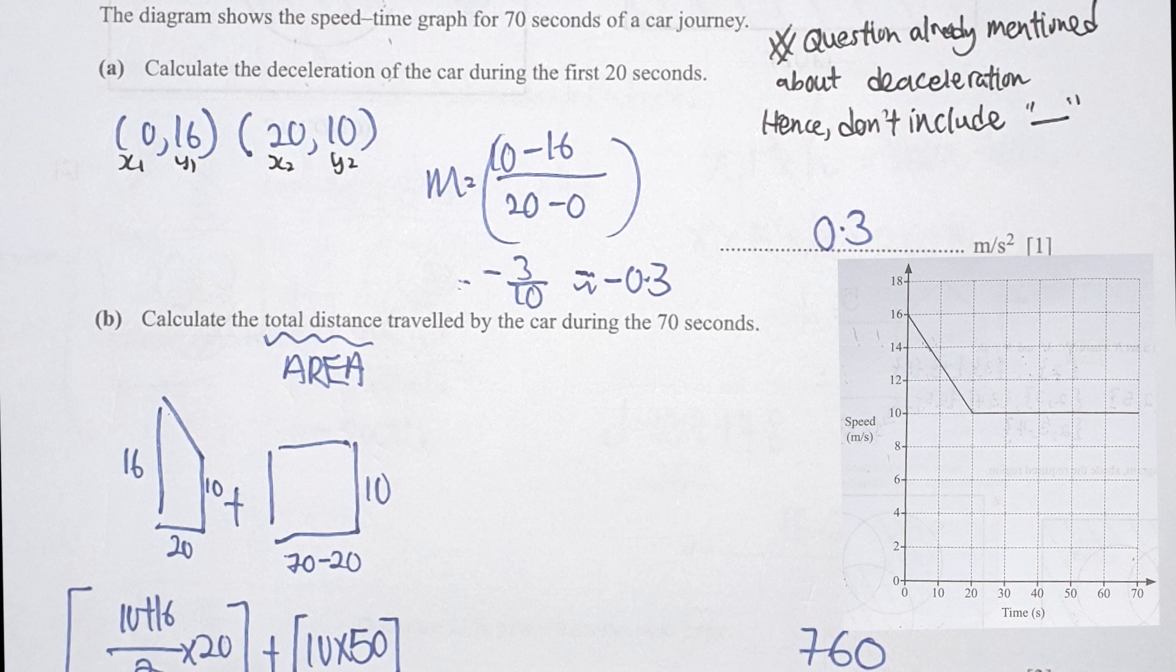Question 19: calculate the deceleration of the car during the first 20 seconds. I have two coordinates here, which is 0, 16 and 20, 10. By substituting it to the gradient formula, you should get your result as negative 0.3. However, since the question mentioned about the acceleration already, you just put in 0.3 as your final result.